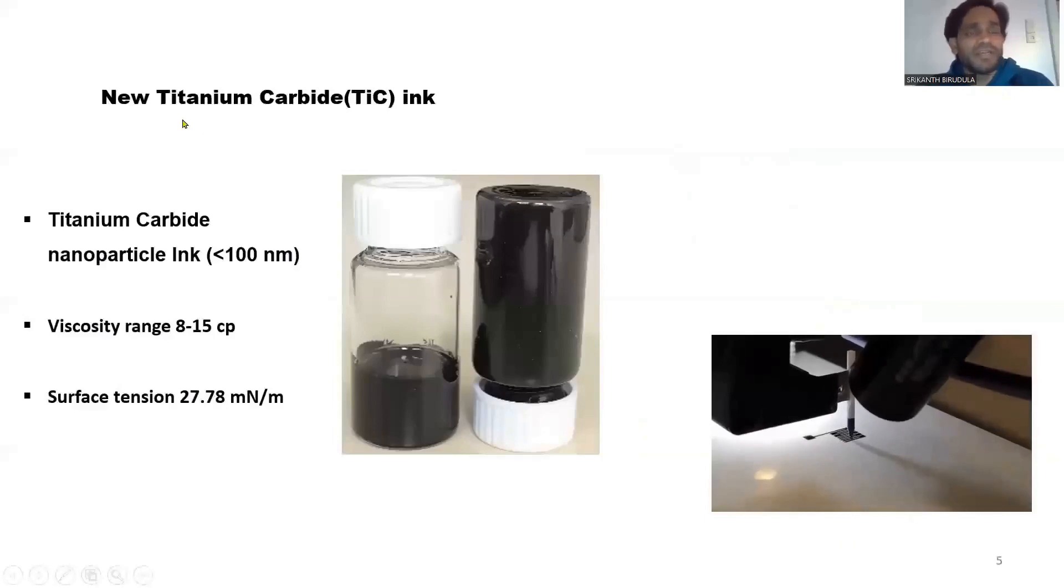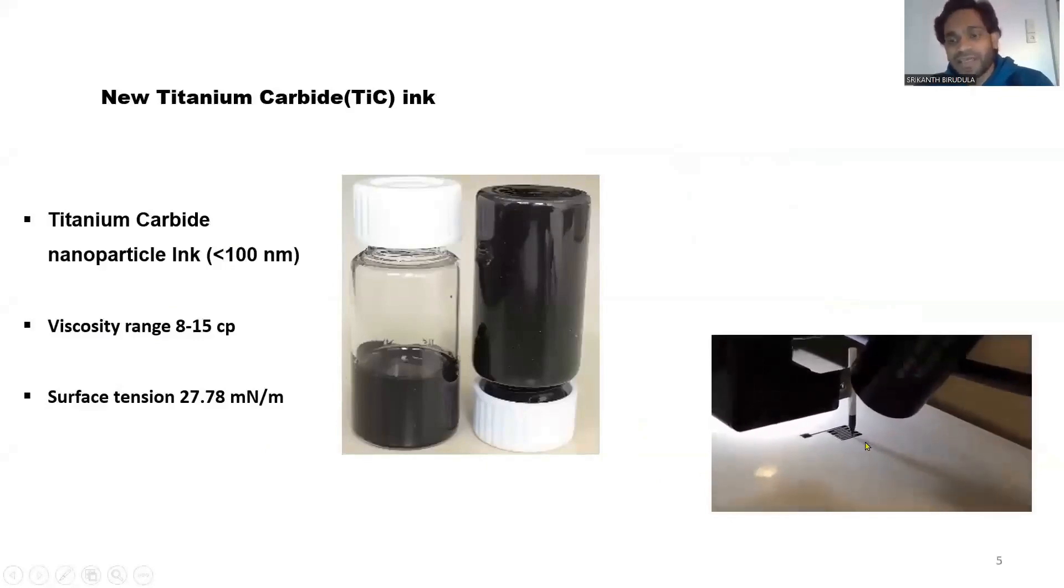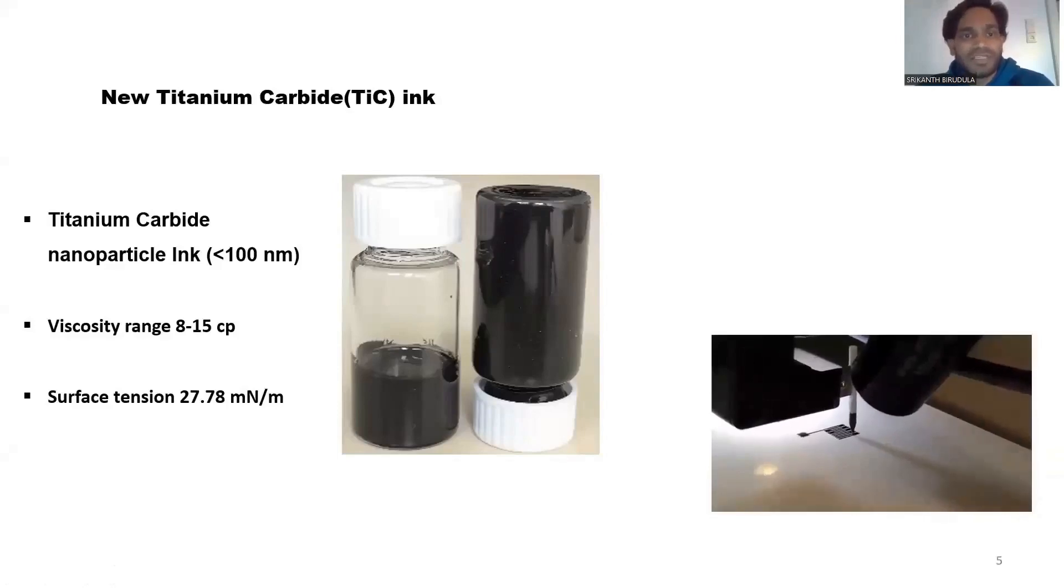In the group, we formulated new titanium carbide nanoparticle inks with particle sizes around 100 nanometers and less. Here you can see the ink which we formed in our group. We optimized the ink to perform inkjet printing with a viscosity range from 8 to 15 cP and measured the surface tension. The ink fluid nature is very suitable for inkjet printing—it's not clogging and is pretty stable. We chose titanium carbide because it's ceramic and chemically inactive, so it has more stability compared with other materials.